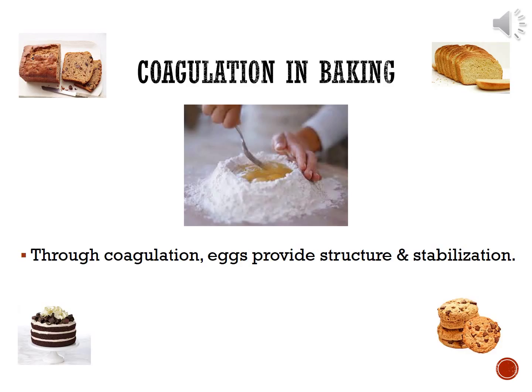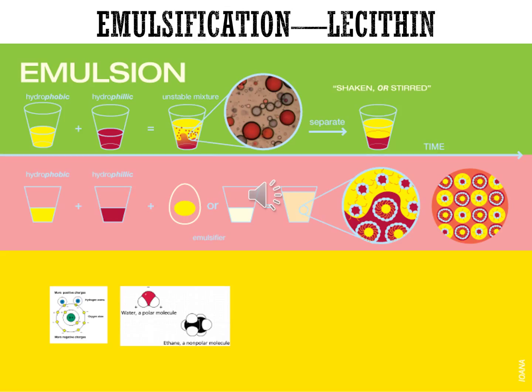With an emulsion, you have a mixture of two liquids that do not normally mix. When you add an emulsifying agent, it causes these ingredients to mix together and uniformly distribute within one another. The emulsifying agent holds each of these two ingredients so that even though they are next to molecules they don't normally associate with, they remain stable. In eggs, the chemical lecithin, found in the egg yolk, is specifically responsible for this emulsifying function.